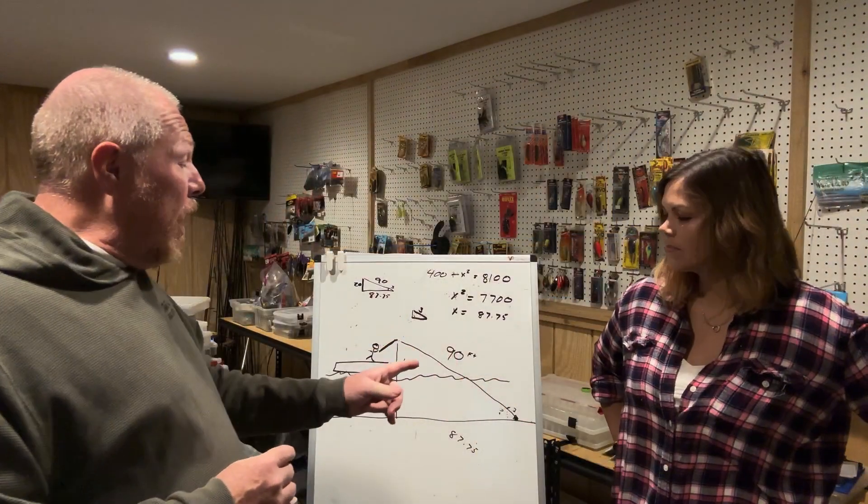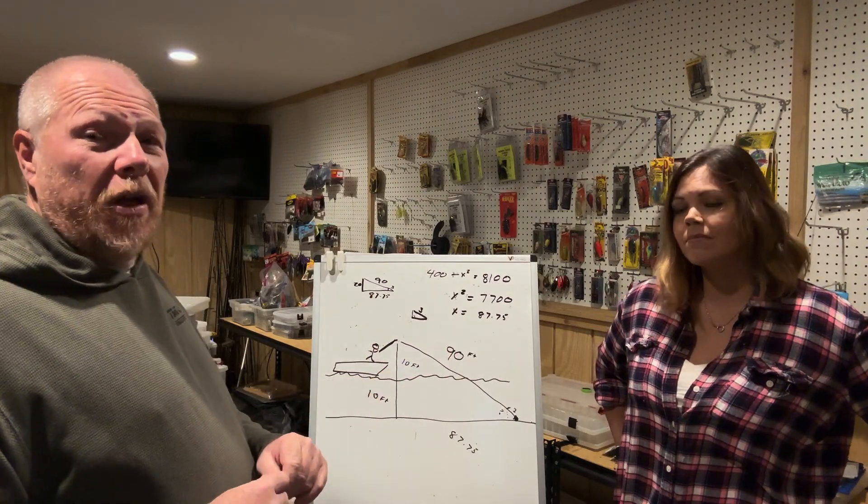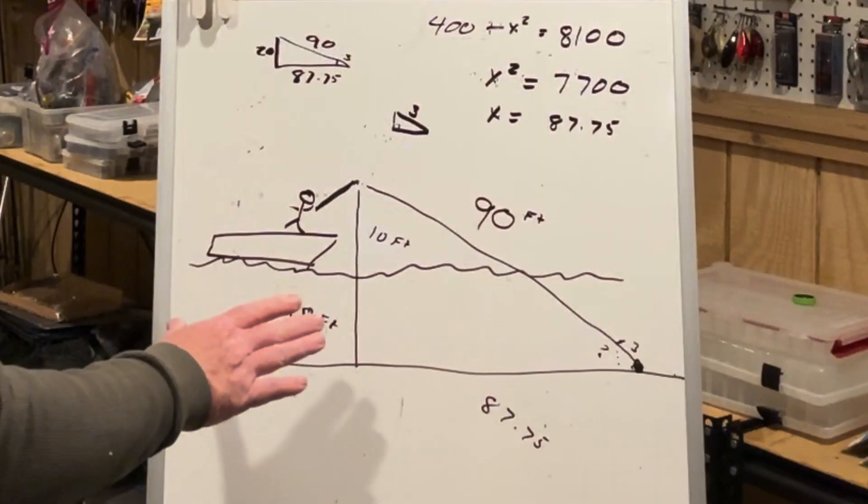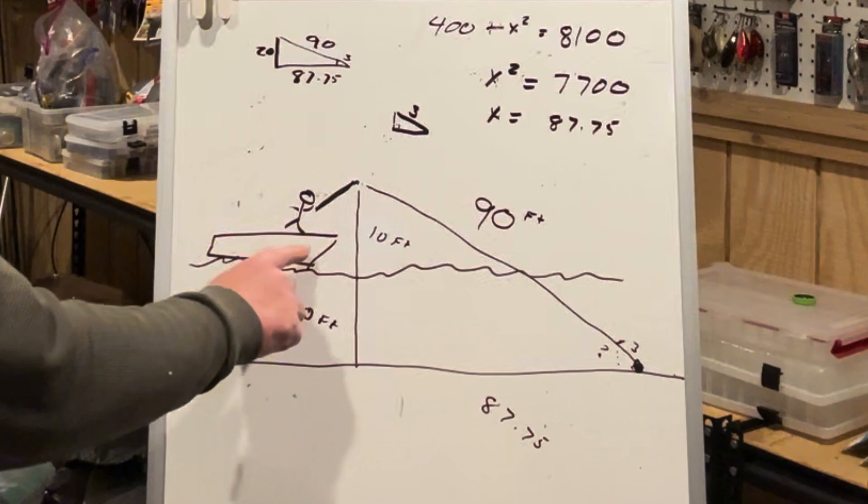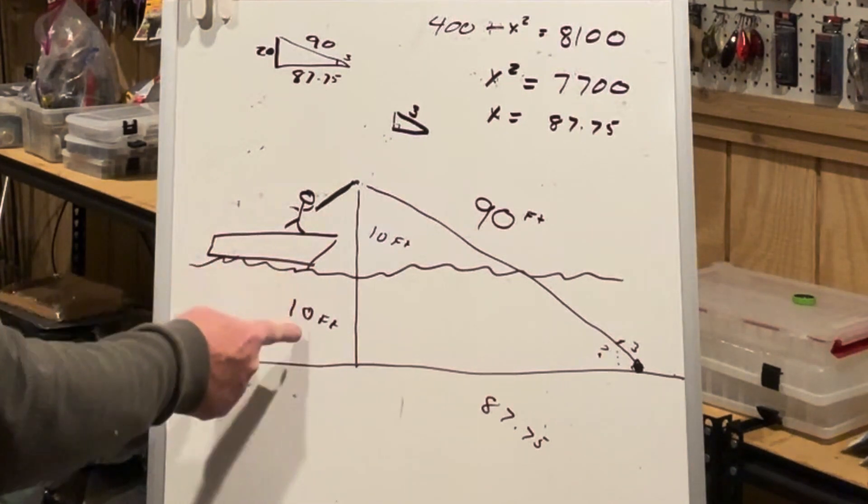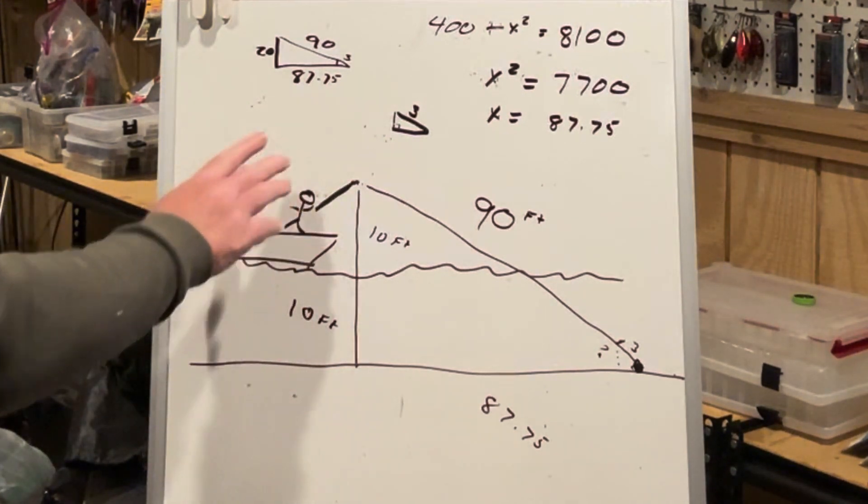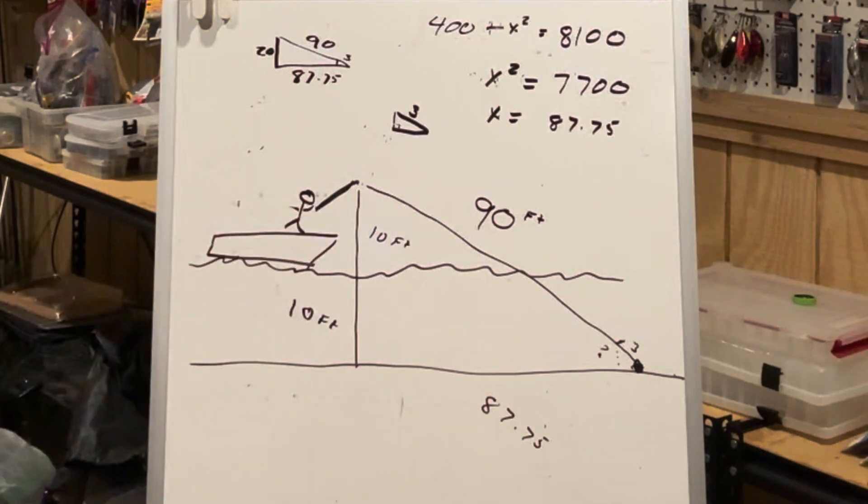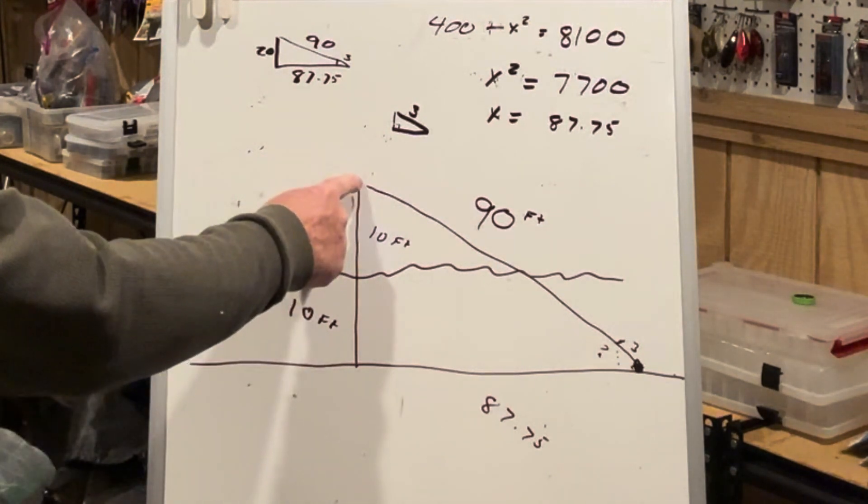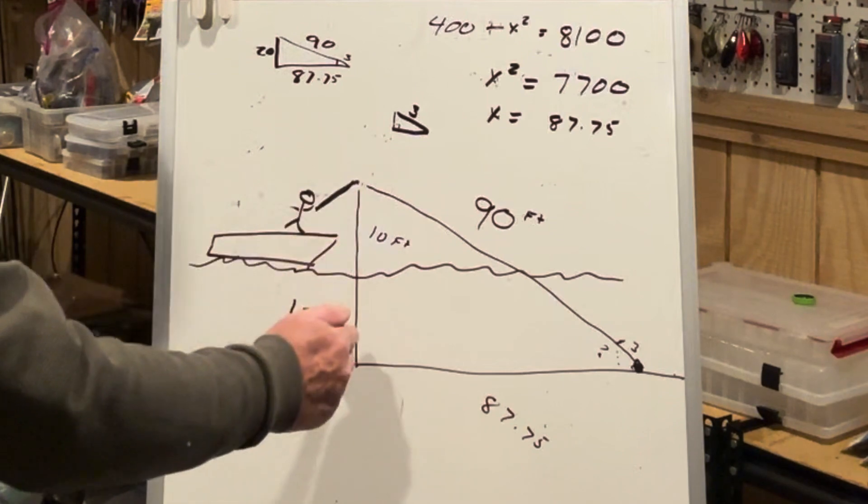If you can take a look at this diagram that we have here, I'm just kind of demonstrating. If this is you in the boat and you're in 10 feet of water, your rod is actually probably adding another 10 feet to the length of the distance of an angle.